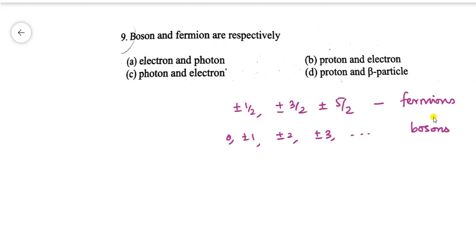We know the concept: integral spin values belong to bosons, and half-integral spin values belong to fermions. So, looking at the electron — its spin is plus half or minus half, making it a fermion. The photon is a light particle. The proton has spin plus half. The beta particle is essentially an electron, so it also has spin plus or minus half.